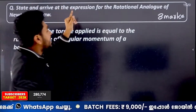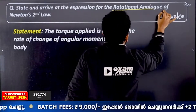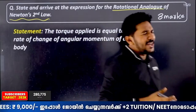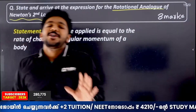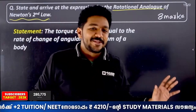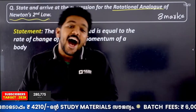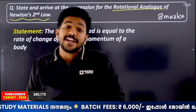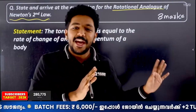State and arrive at the expression for the rotational analogue of Newton's second law. That's not Newton's second law — it's the rotational analogue of Newton's second law, which is rotational motion. There's one equation — that equation is the state. The second law is stated. I will take a derivation of 3 marks.